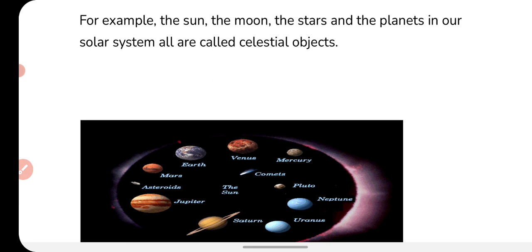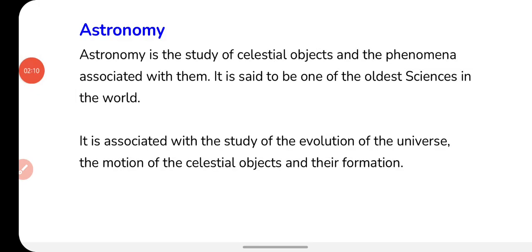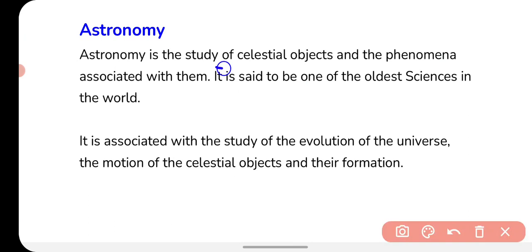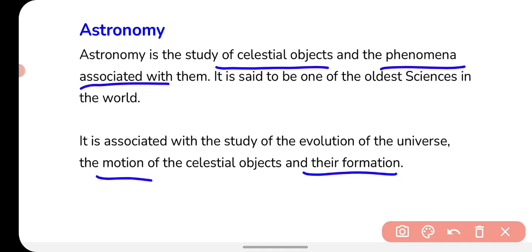Next, we will talk about astronomy. When we study celestial objects and phenomena related to them, that study is called astronomy. It is said to be one of the oldest sciences in the world — it has been studied since very ancient times. Astronomy is associated with the study of the evolution of the universe, and also the motion and formation of celestial objects.